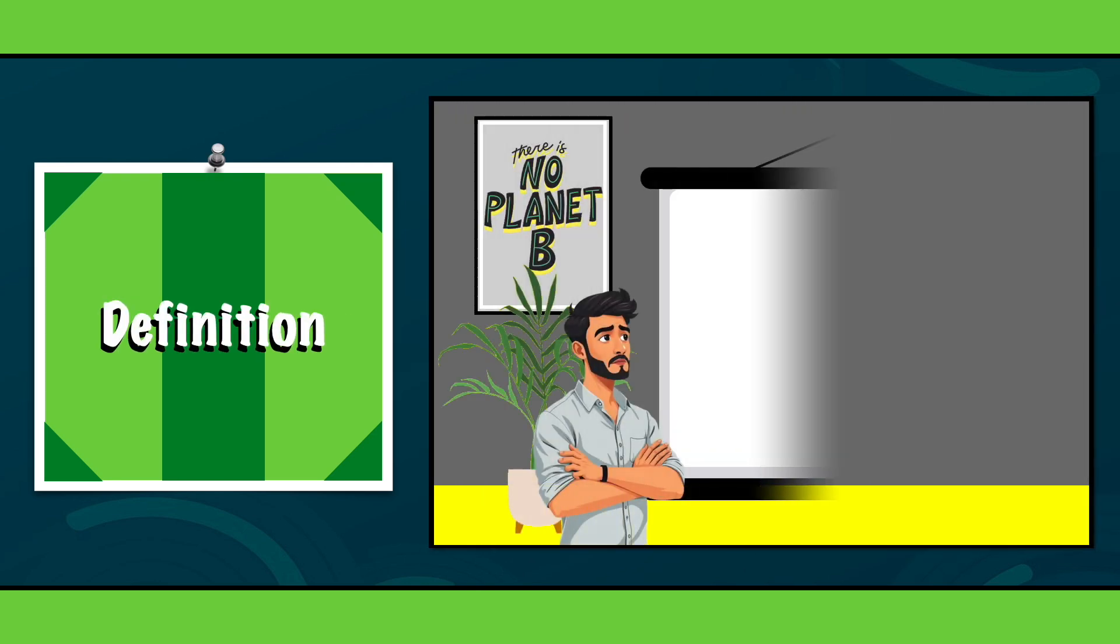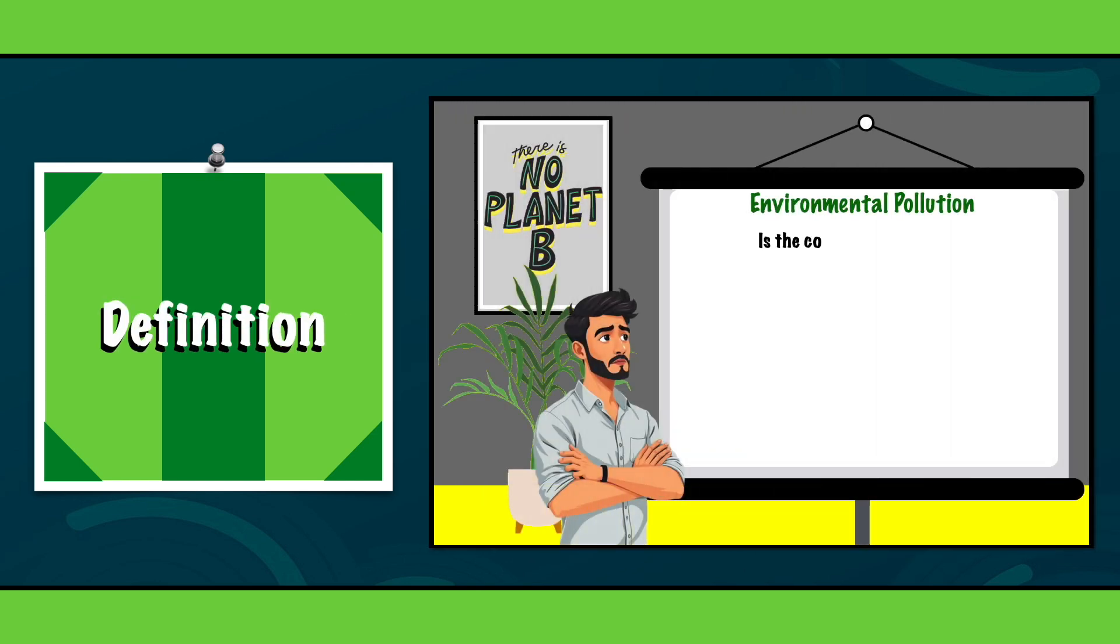In order to get a better understanding of environmental pollution, we will first look at its definition. In essence, environmental pollution is the contamination of the natural world, including our air, water, soil and even sound levels, due to harmful human activities.